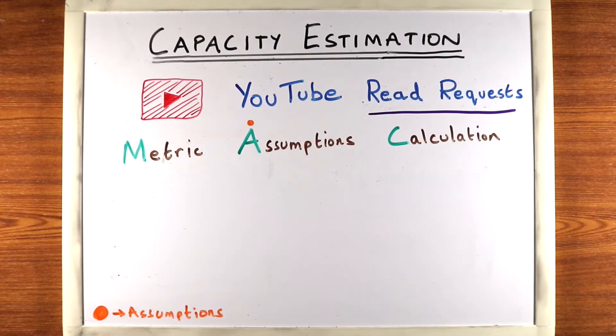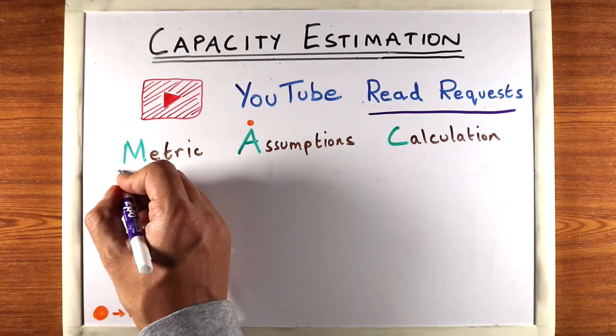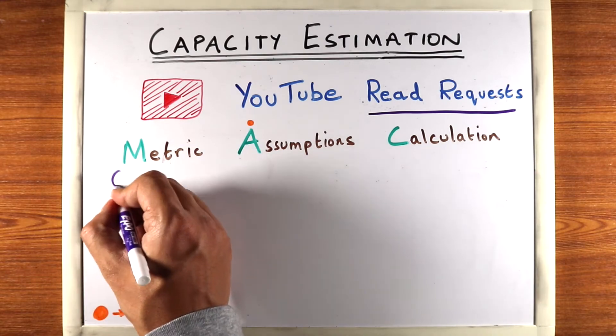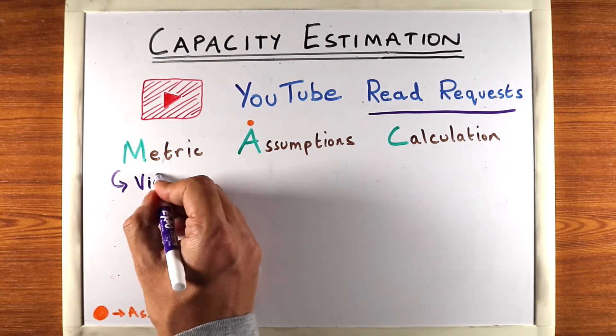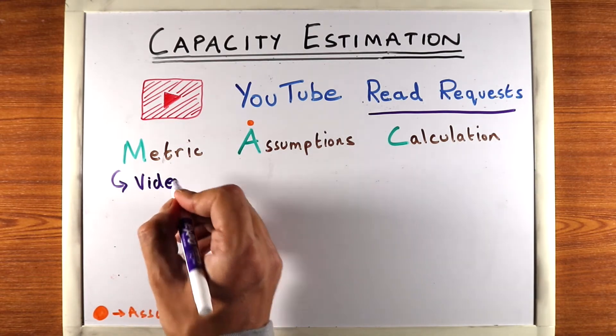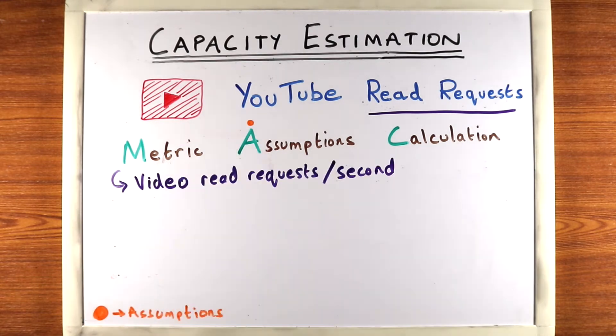So what is the metric we're looking for? The metric here is how many video read requests do we get per second — how many requests do we get per second in our system?